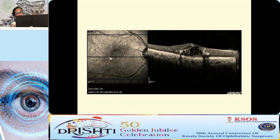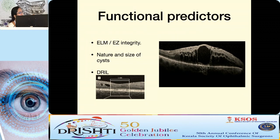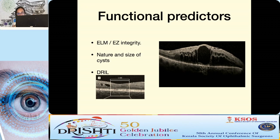In diabetic macular edema, despite massive edema, if the outer retinal zones are relatively intact, the patient is likely to have a good visual outcome following treatment. In contrast, large cystoid spaces that are predominantly vertically oval indicate chronicity. When you also see an epiretinal membrane and the ellipsoid zone and external limiting membrane are practically absent, you must explain guarded visual prognosis even with treatment. Vertically oval cysts indicate chronicity — an important prognostic sign.